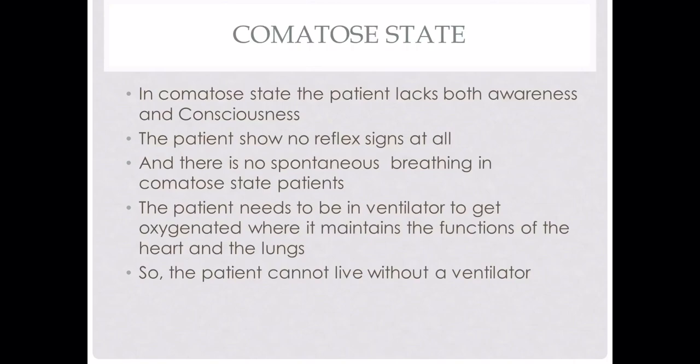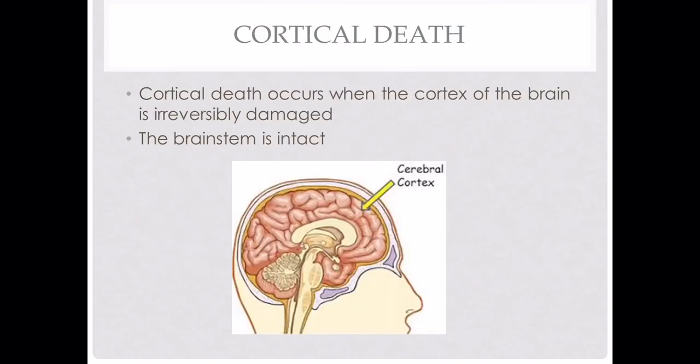The first type is cortical death. Cortical death occurs when the cortex of the brain is irreversibly damaged, while the brain stem remains intact. The cerebral cortex contains higher centers which consist of the pre-central gyrus and post-central gyrus. The pre-central gyrus plays a major role in motor impulse transmission, and the post-central gyrus plays a major role in sensory impulse transmission. If the cerebral cortex is irreversibly damaged, these functions are disturbed.